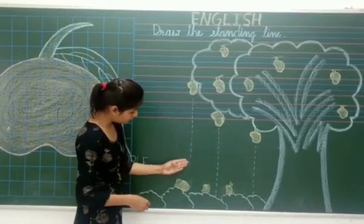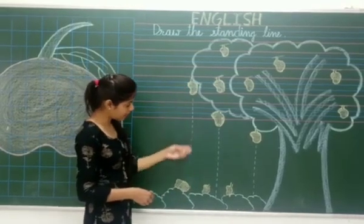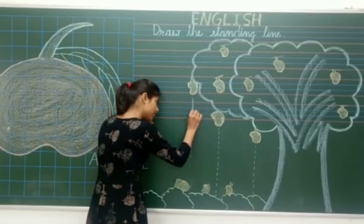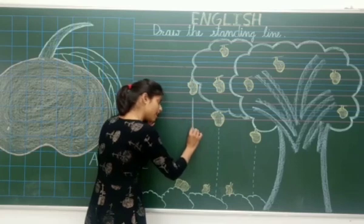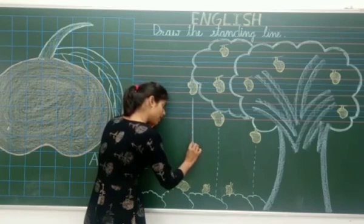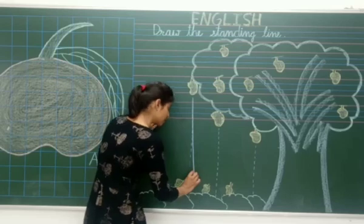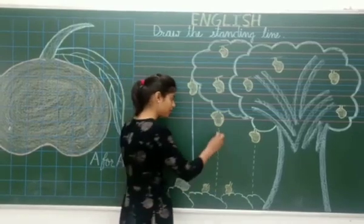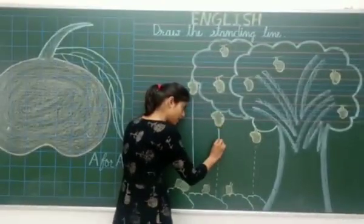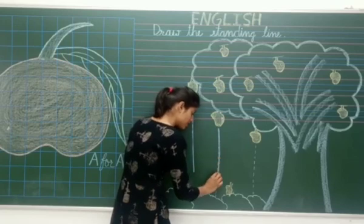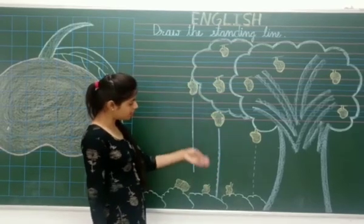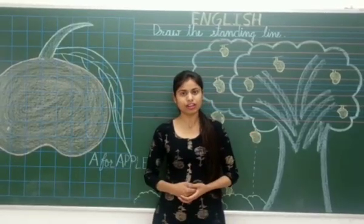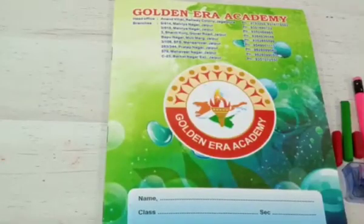Mangoes are falling from the tree. And how are they falling? Standing line. So make the standing line. Standing line. Standing line. It's done. This is the standing line. Make the standing line in your English notebook.